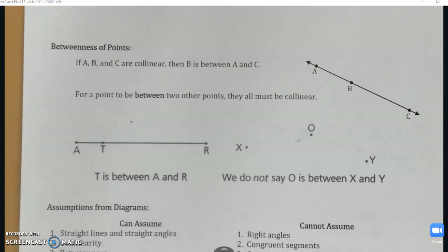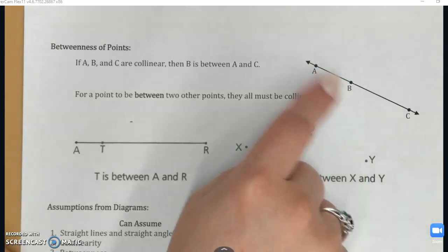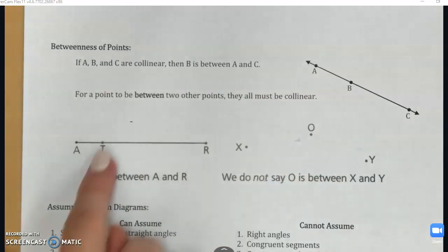And on a similar tone, betweenness of points, if the points are collinear, then we can say when one is between the other. But if they're not collinear, we cannot use the word between. So on this line, B is between A and C. Or on this one right here, T is between A and R.